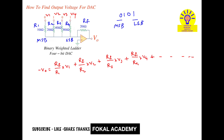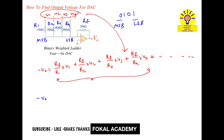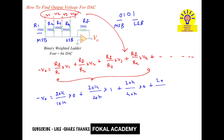Since only four inputs are given, we take the equation up to here. Substituting all values: minus V0 equals 20K over 10K times 0, plus 20K over 20K times 1, plus 20K over 40K times 0, plus 20K over 80K times 1.